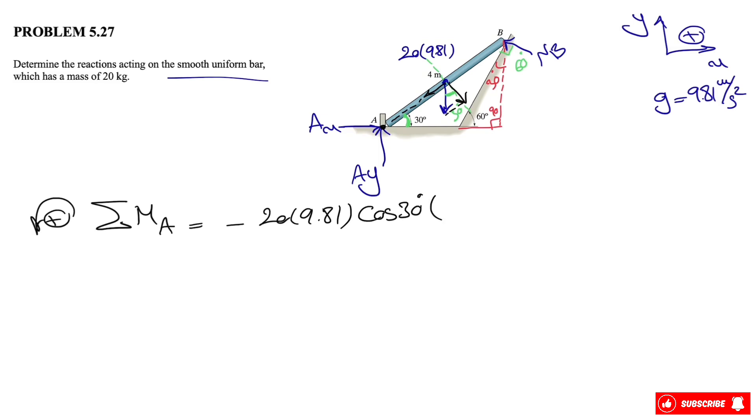The force is 20 times 9.81. If you look at this triangle here, it will be cosine of 30, and the distance will be half of the distance that we have for the beam, which is 4 divided by 2, or 2. And the next moment that we have will be the moment of NB.